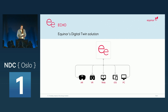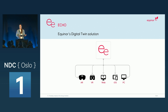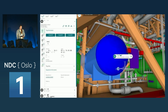Our VR solution is a part of Echo, and Echo is Equinor's digital twin. This is accessible through numerous user interfaces, depending on user needs and preferences. We have built Echo in-house, in close contact with our users, to customize it for our particular cases. So what does a digital twin mean in our case? First and foremost, it is a three-dimensional visual copy of our assets.